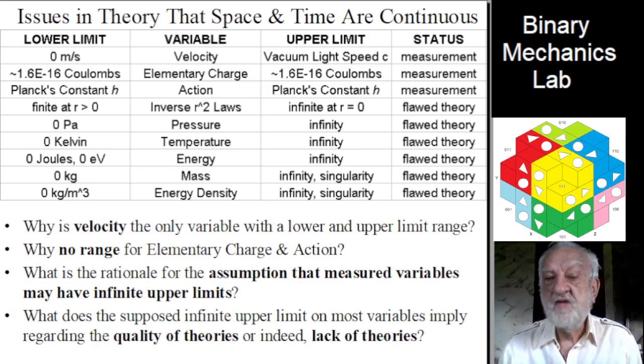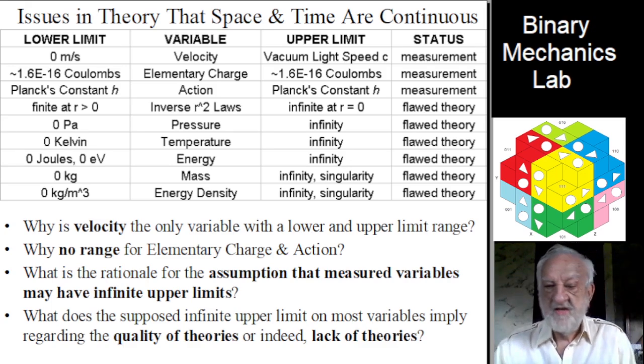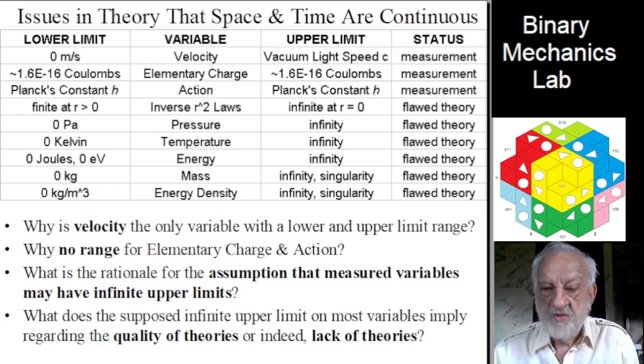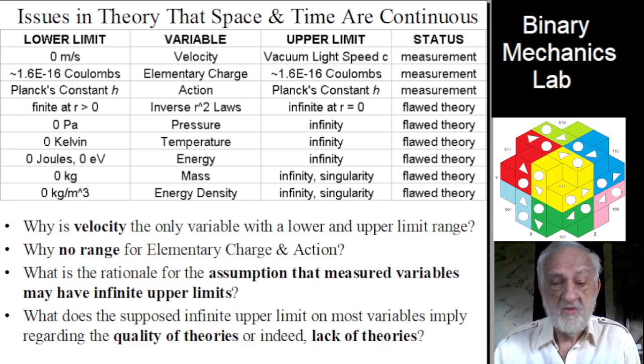Why is velocity the only variable with a real lower and upper limit range? Why no range for elementary charge e and action h? What is the rationale for the assumption that measured variables may have infinite upper limits? What does the supposed infinite upper limit on most variables imply regarding the quality of theories, or indeed the lack of useful theory?